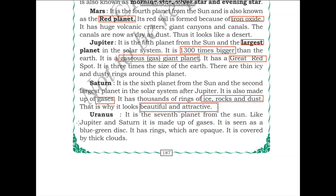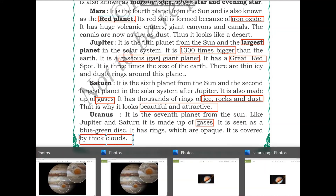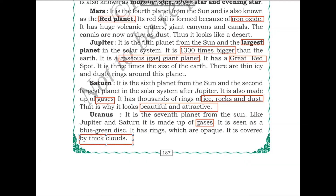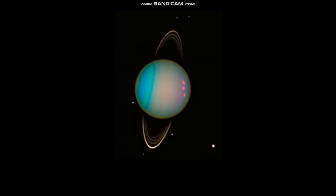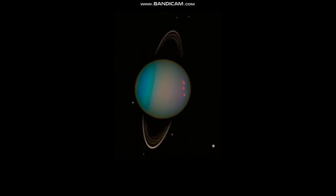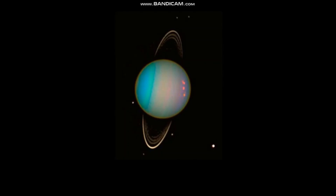Uranus is the seventh planet from the sun. Like Jupiter and Saturn, it is made up of gases. It is seen as a blue-green disk, has opaque rings, and is covered by thick clouds. As you can see, it is a beautiful sea-green color with opaque rings around it.